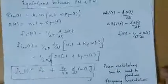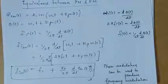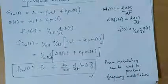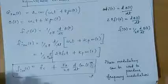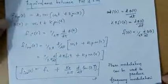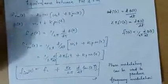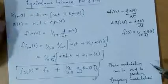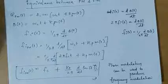This expression shows that phase modulation can be used to produce a frequency modulated wave. Using phase modulation you can produce a frequency modulated wave. That is why phase modulation is recommended for waveform generation — using phase modulation we can generate a frequency modulated wave.